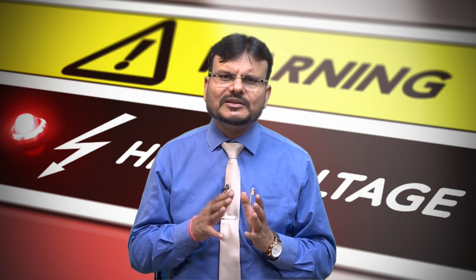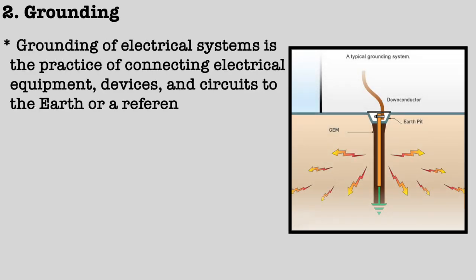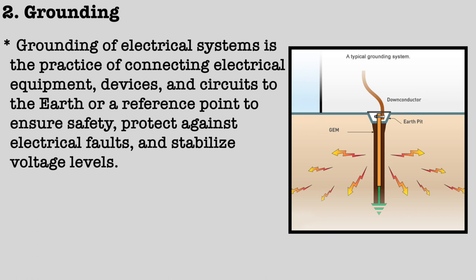Earthing helps prevent electrical shock and fires by maintaining the electrical potential of exposed metal parts close to zero. In telecommunications, earthing involves connecting metallic components such as antennas and towers to the earth to reduce electrical interference and enhance signal quality. Grounding is the practice of connecting electrical equipment, devices and circuits to the earth or a reference point, usually through a conducting pathway like a copper rod buried in the ground, to ensure safety, protect against electrical faults and stabilize voltage levels.